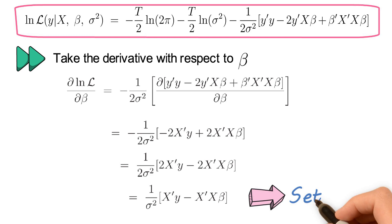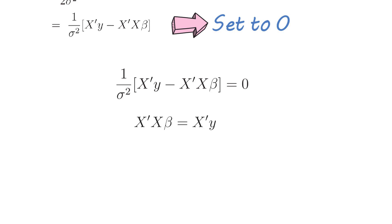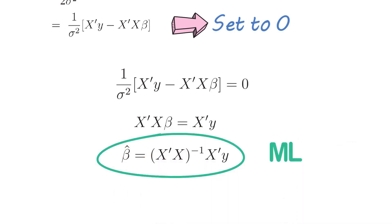Now we have to set the partial derivative to zero if we want to find the optimal value. So the gradient condition is that one over sigma square times x prime y minus x prime x beta needs to be zero. Multiplying by sigma square and bringing the x prime x beta to the other side, you end up with x prime x beta equals x prime y. Now solving for the optimal beta gives x prime x to the minus one times x prime y. So that is the maximum likelihood solution for the slope coefficient.